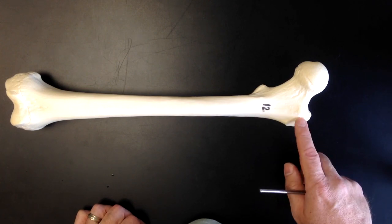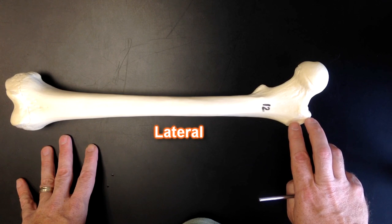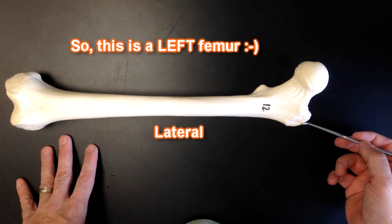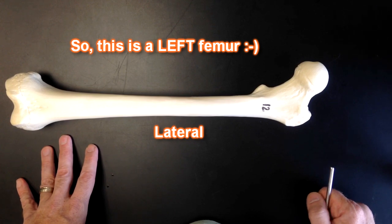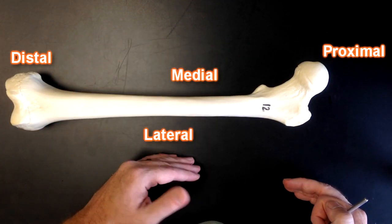And then on the lateral aspect of the femur you would be able to notice this structure right here. This structure is going to be called the greater trochanter. Okay, so proximal, distal, medial, lateral.